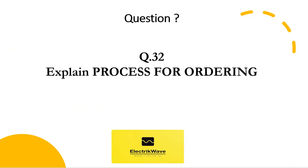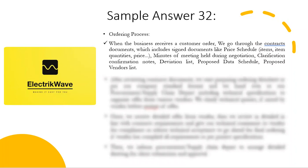Question number 32: explain the process for ordering. Sample answer 32: when the business receives a customer order, we go through the contract's documents, which includes signed documents like price schedule, items, item quantities, price, minutes of meeting held during negotiation, clarification confirmation notes, deviation list, proposed data schedule, and proposed vendors list. The ebook link is given in the description box — download it and get ready for the interview.